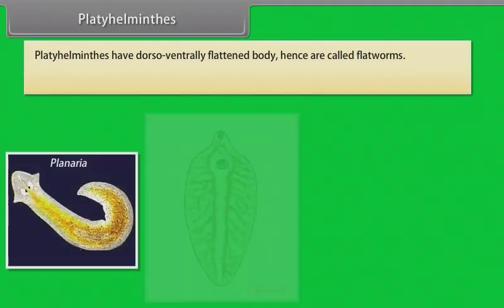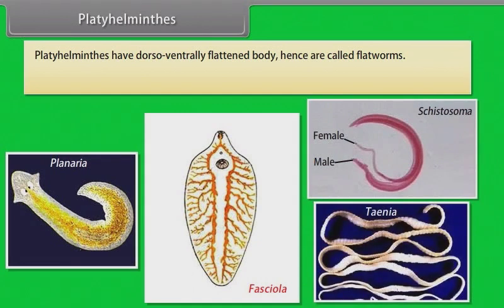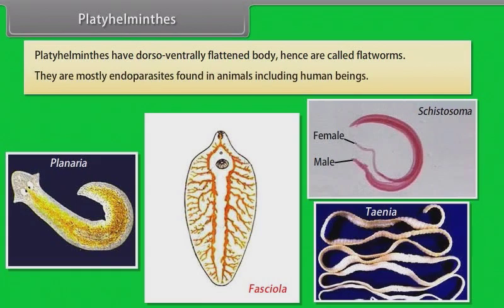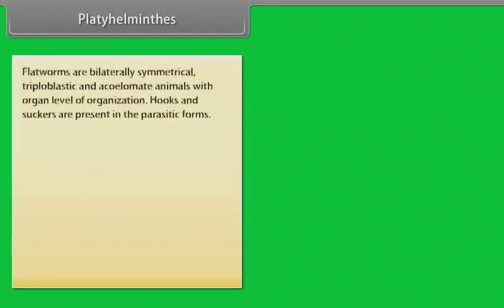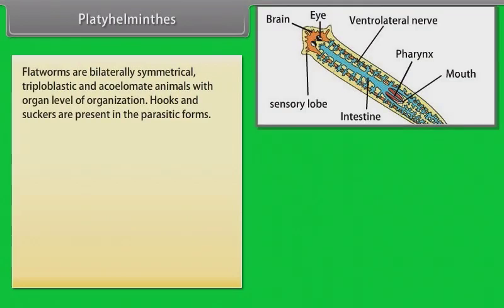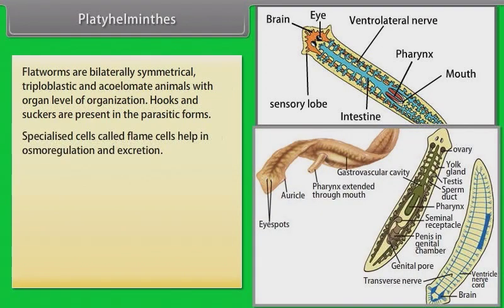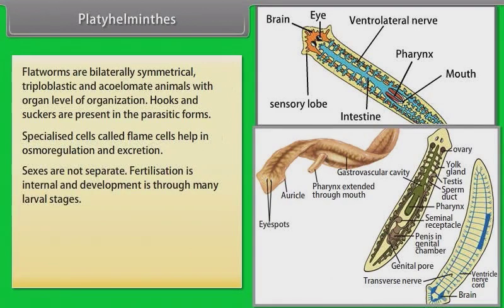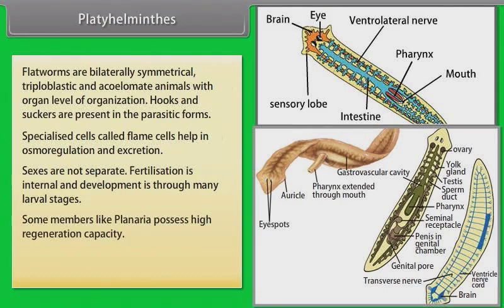Platyhelminthes have dorsoventrally flattened bodies, hence are called flatworms. They are mostly endoparasites found in animals including human beings. Flatworms are bilaterally symmetrical, triploblastic and acoelomate animals with organ level of organization. Hooks and suckers are present in the parasitic forms. Specialized cells called flame cells help in osmoregulation and excretion. Sexes are not separate; fertilization is internal and development is through many larval stages. Some members like Planaria possess high regeneration capacity.